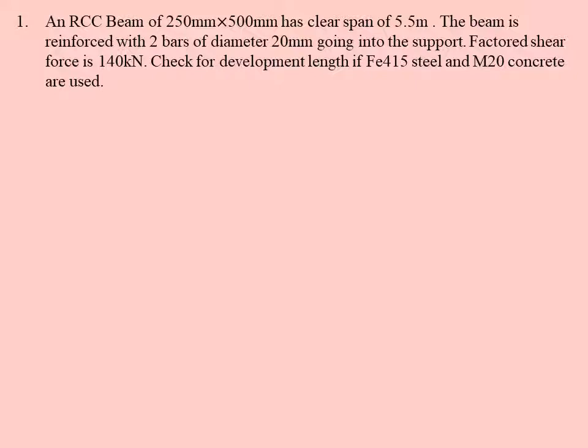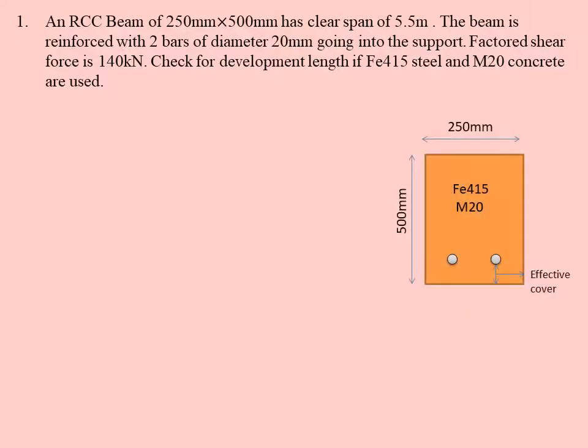First I'm going to draw the question. It is 250 mm by 500 mm and has a clear span of 5.5 m. Nothing is mentioned if the length and width of an RCC beam is given. Effective is known, that means the depth given to us is the overall depth.